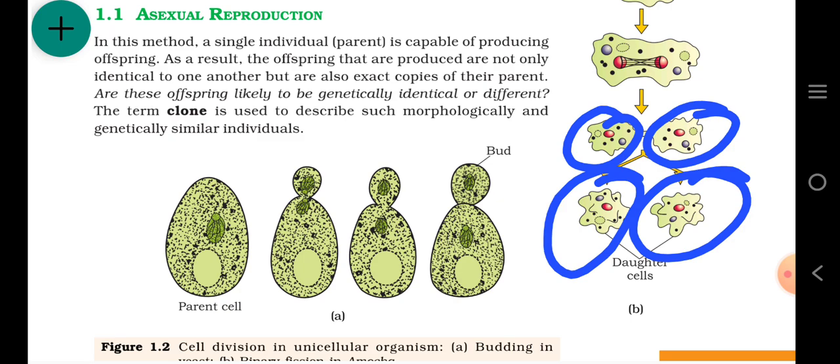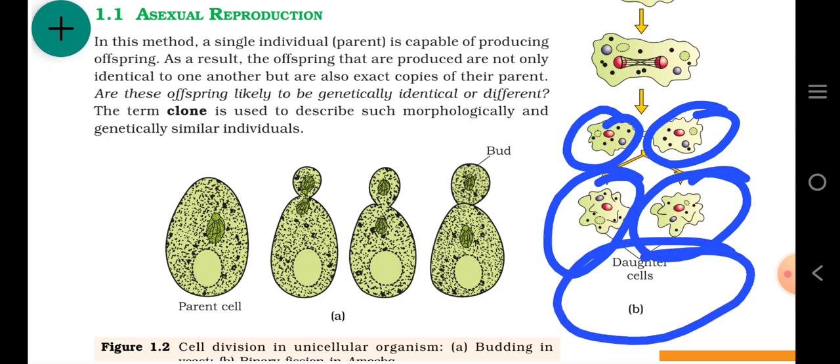When the nucleus divides, it is karyokinesis. When the cytoplasm divides, it is cytokinesis. After cytokinesis, new daughter cells are formed.